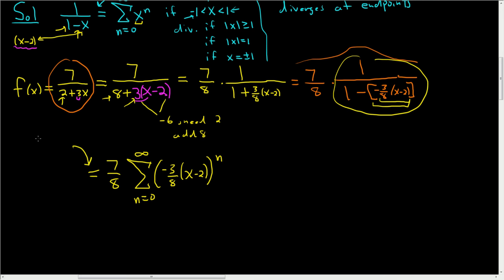This equality is true as long as our x is less than 1. So as long as this is less than 1. So if the absolute value of negative 3 eighths, x minus 2 is less than 1, or in other words, if it's between negative 1 and 1. Now whenever you take the absolute value, the negative goes away. So we get 3 eighths, x minus 2 less than 1. So that's when this equation is true. We're going to use this to find the interval of convergence, but let's go ahead and finish what we have here.